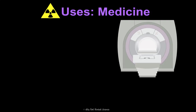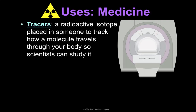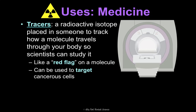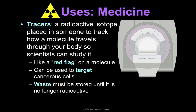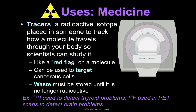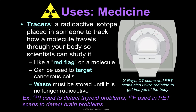A couple of practical uses for nuclear chemistry: first is in medicine. Tracers are radioactive isotopes placed in someone to track how a molecule travels through their body so scientists can study it — almost like a red flag on a molecule — and we can use them to help target cancer cells. The problem is these tracers produce radioactive waste, so we have to store it until it's no longer radioactive. Examples include iodine-131 to detect thyroid problems and fluorine-18 used in PET scans to detect brain problems. These scans, along with X-rays and CT scans, often use radiation to get images of the body.